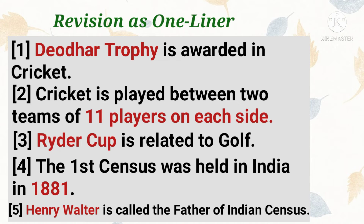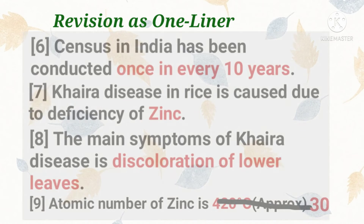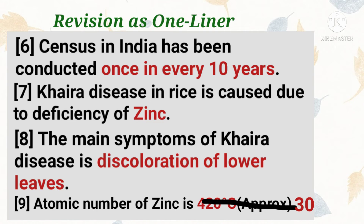Number 4: the first census was held in India in 1881. Number 5: Henry Walter is called the father of Indian census. Number 6: census in India has been conducted once every 10 years since 1881. Number 7: Khoira disease in rice is caused due to deficiency of zinc.